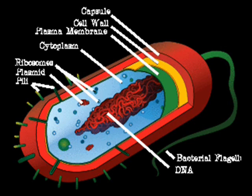The bacterial flagellum is what the cells use to propel themselves forward. Where mammal cells move around like a fish would, moving forwards from left to right, these cells are more like a motor in a boat — they spin around and around to move forwards.